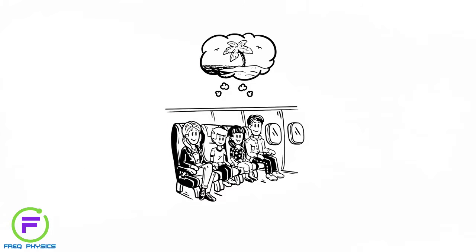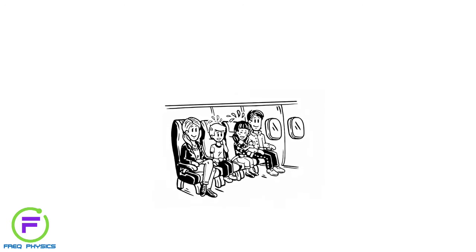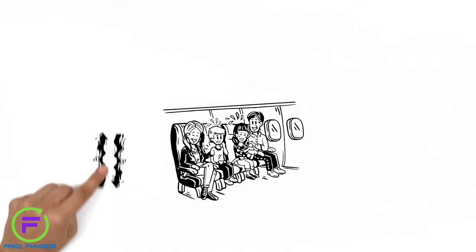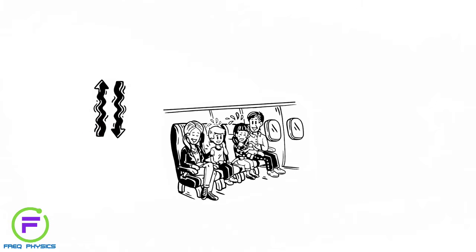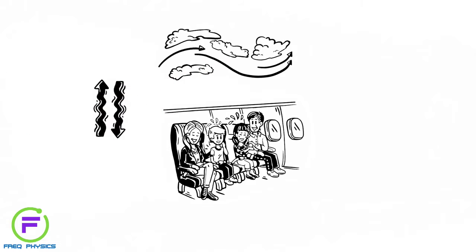But suddenly, the whole plane starts to shake. The kids get scared and think it'll crash. Their parents calm them down and explain that these vibrations, called turbulence, are normal and caused by the irregular motion of air flows. Although it may feel scary, it's completely harmless.